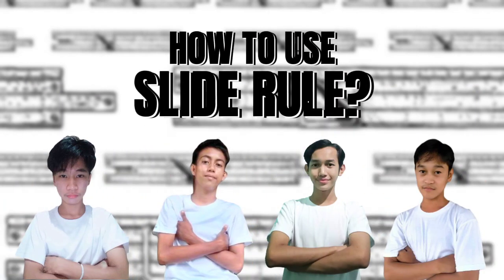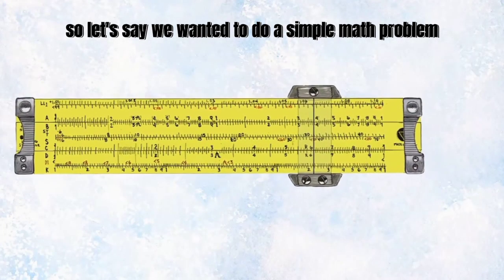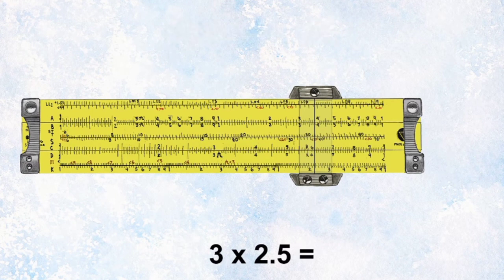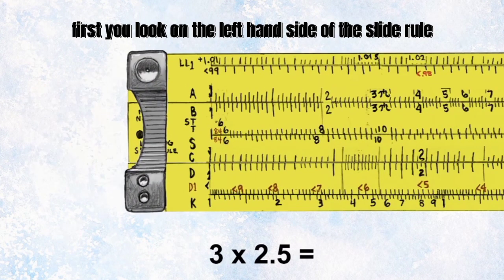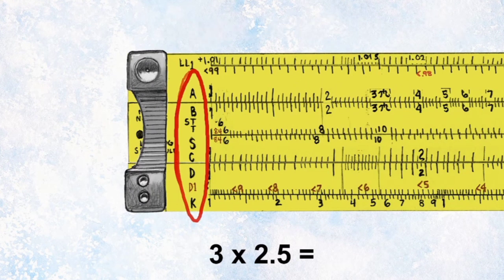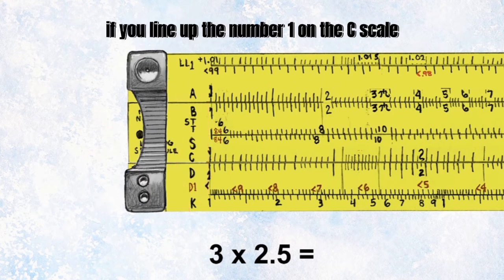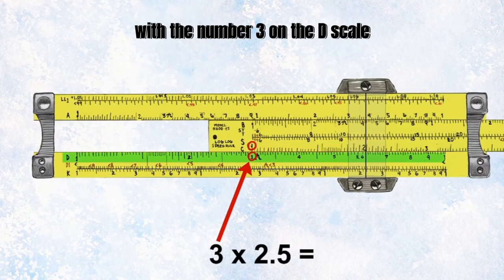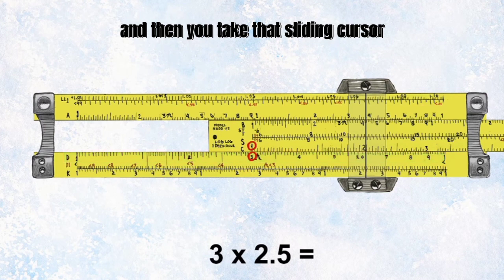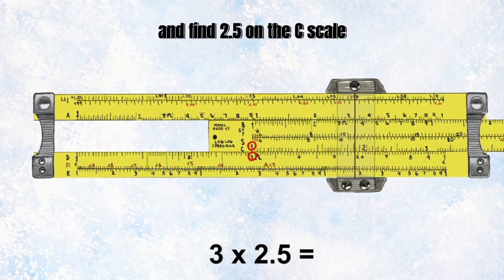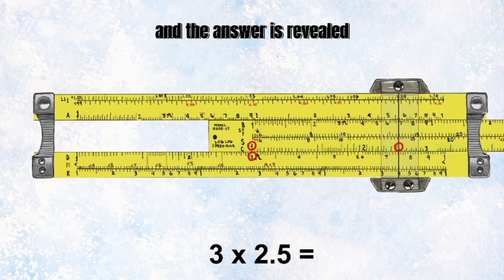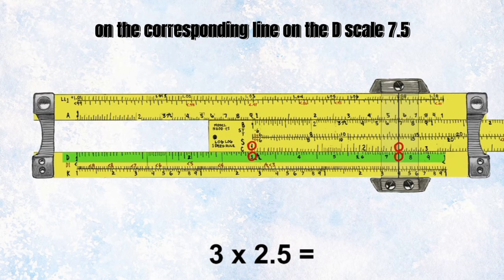How do you use a slide rule? Let's say we wanted to do a simple math problem, like what's 3 times 2.5. First, you look on the left-hand side of the slide rule — you'll see scales. If you line up the number 1 on the C scale with the number 3 on the D scale, and then take the sliding cursor and find 2.5 on the C scale, the answer is revealed on the corresponding line on the D scale: 7.5.